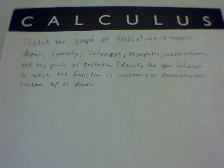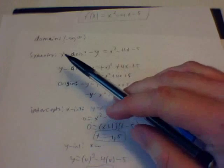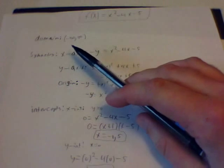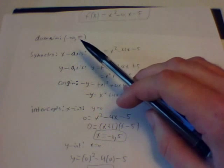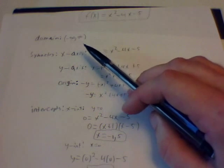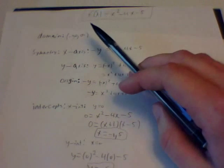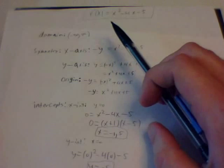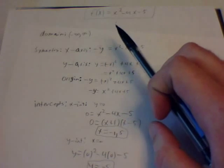The first thing we need to look at is the domain. The domain is going to be from negative infinity to infinity because there's nothing in the denominator.